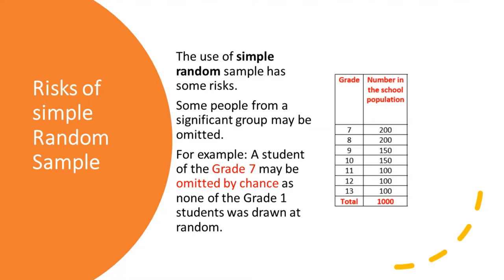Let me explain with an example of a school where we have children from grade 7 to grade 13. The table shows grade 7: 200, grade 8: 200, grade 9: 150, grade 10: 150, grade 11: 100, grade 12 and 13: 100 each, making a population of 1000. If we put these 1000 names in a box and pick 100 at random, it may be that by chance grade 9 may not be picked at all, or you may find more from grade 13 and less from grade 7. How do we avoid this problem so that there is equal proportion from each grade selected in the sample?